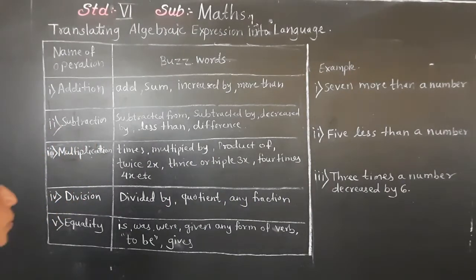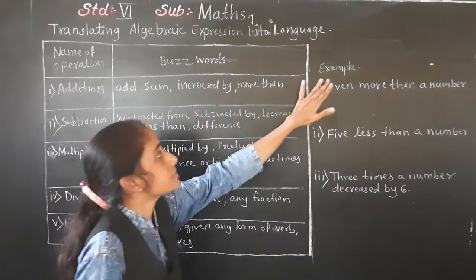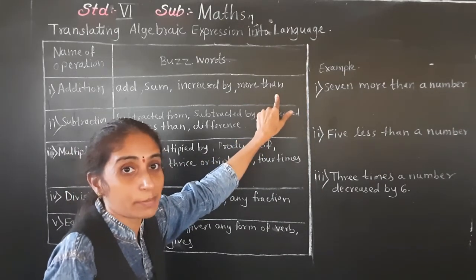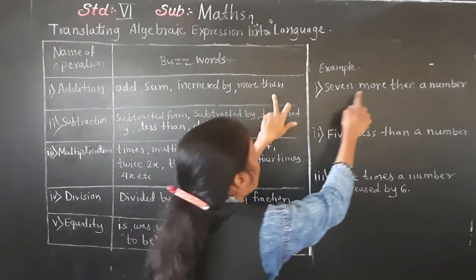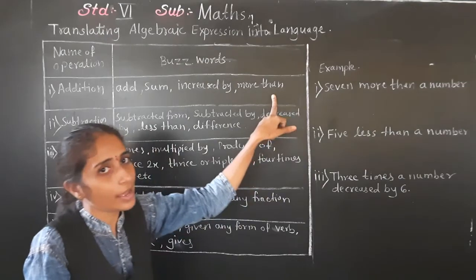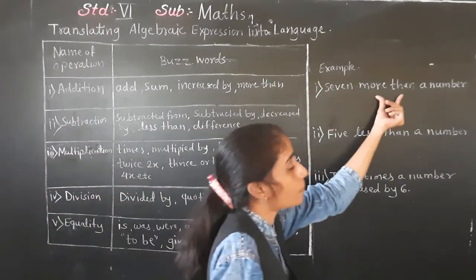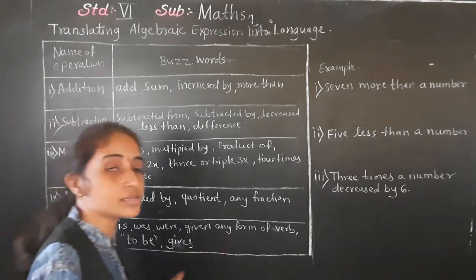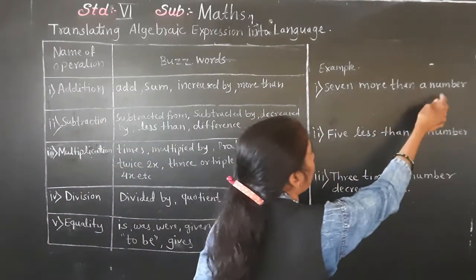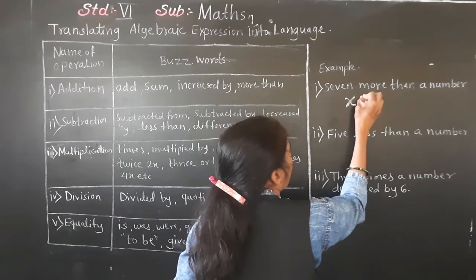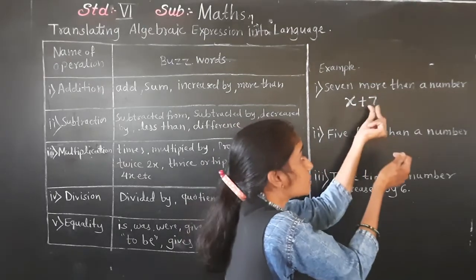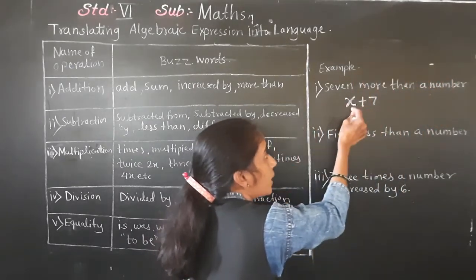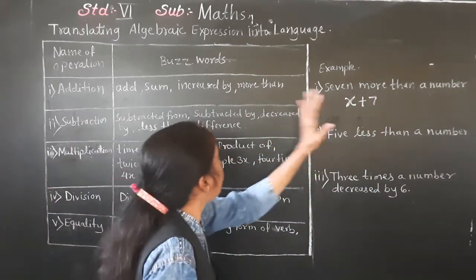Example one: 'Seven more than a number.' The word 'more than' is used for addition. A number we consider as x. Seven more than a number means x plus seven.